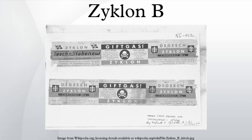In early 1942, Zyklon B had emerged as the preferred extermination tool of the Nazi regime for both the Auschwitz-Birkenau and Majdanek extermination camps during the Holocaust, claiming the lives of roughly 1.2 million people. Rudolf Höss, SS commandant of Auschwitz, said that the use of Zyklon B came about on the initiative of one of his subordinates, Captain Carl Fritzsch, who used the substance to kill some Russian POWs in late August 1941. The experiment was repeated on more Russian POWs, with Höss watching, in September.